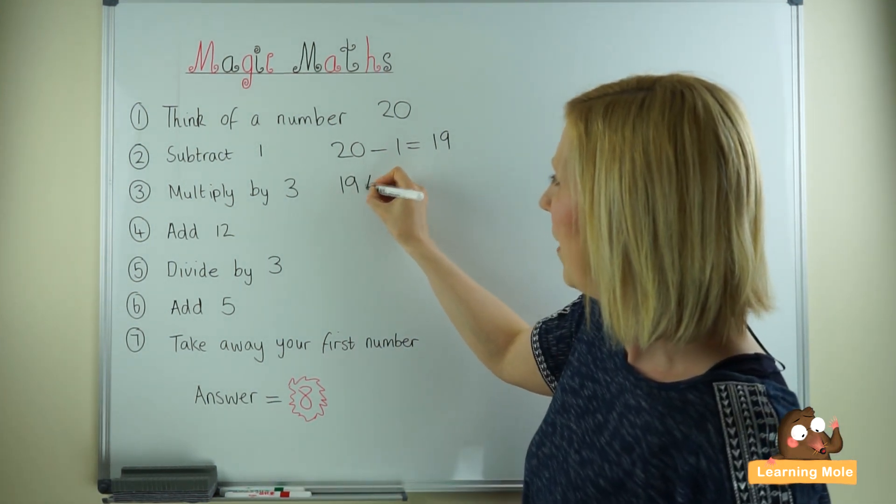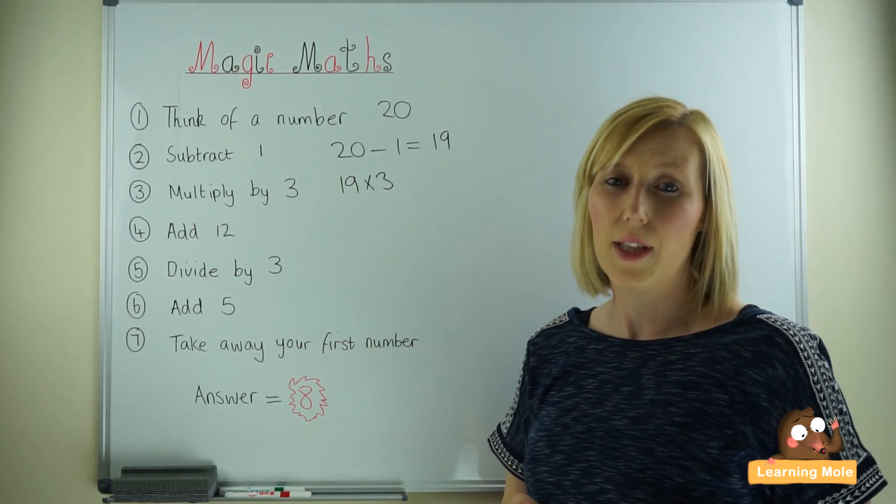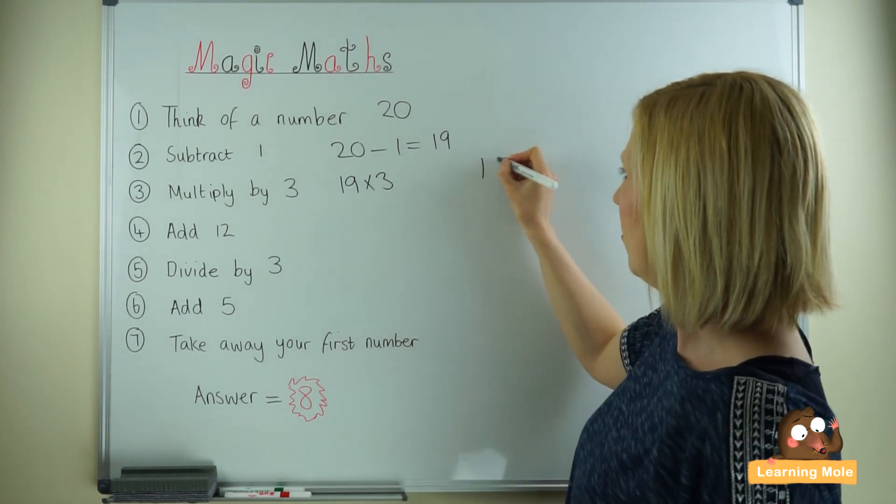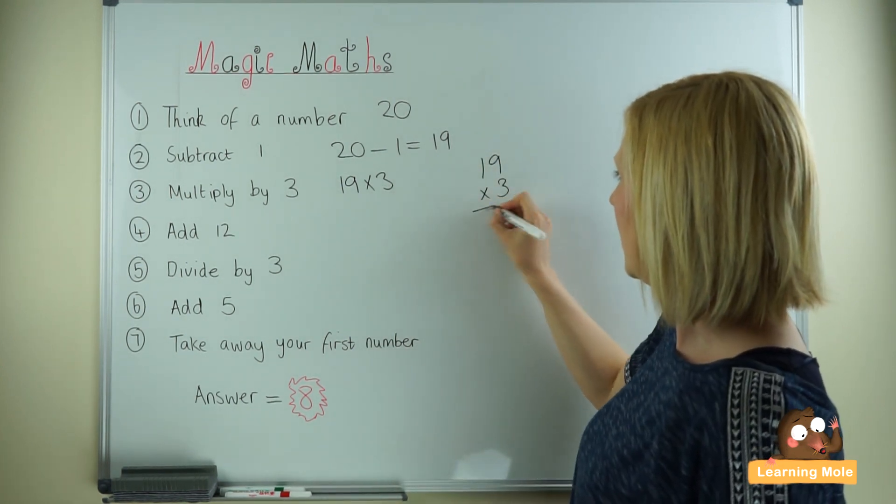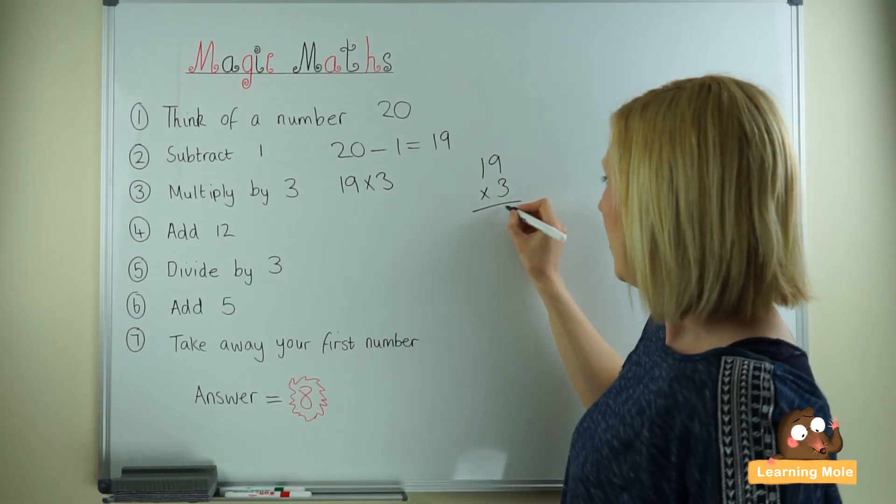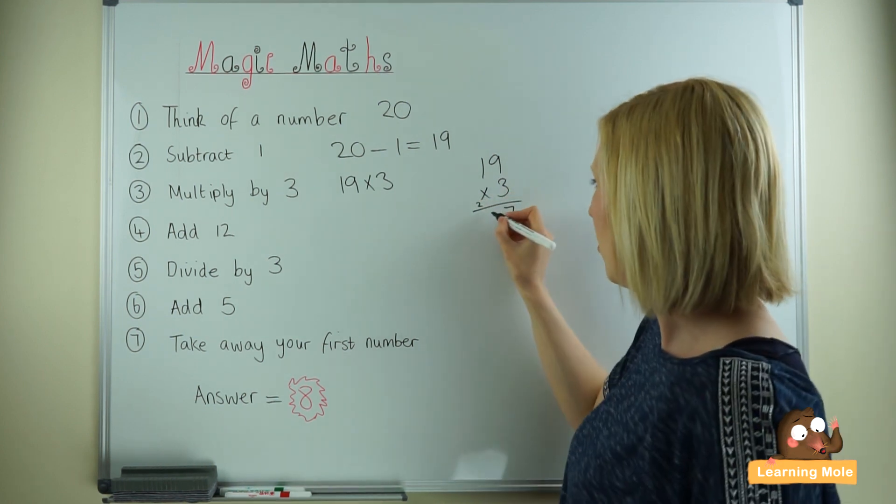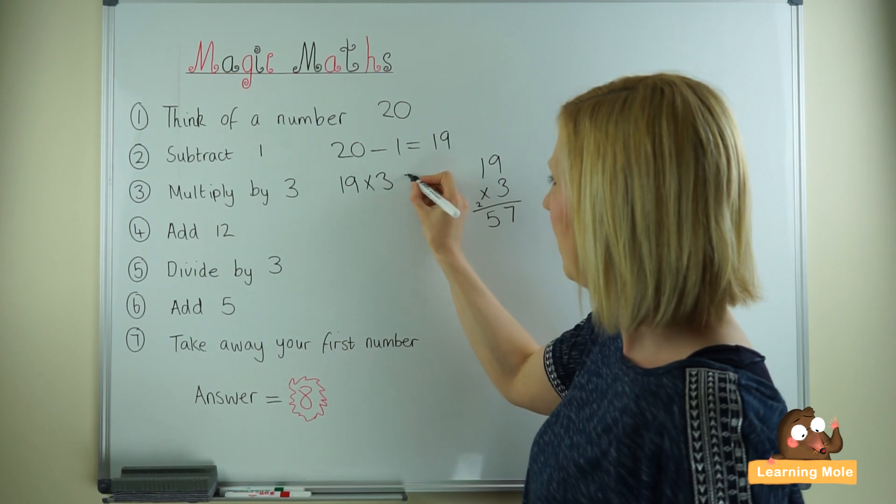19 multiplied by 3. This is at this stage where you might need to use a little bit of short multiplication. So I'm just going to do it over here so it's out of the way. 19 times 3. 3 times 9 is 27, carry our 2. 3 times 1 is 3, plus 2 is 5. Now we have 57.